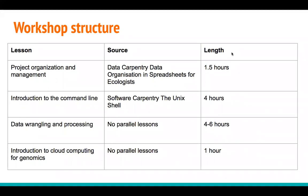The third lesson — the core part of the workshop — is the data wrangling and processing lesson, which has no parallel in any other Carpentries materials and is very specific to working with genomics data. It takes somewhere between four and six hours depending on the audience. It's better to assume it will take longer, as there are many important concepts covered. The workshop ends with a short introduction to cloud computing for genomics, which is about an hour long and quite introductory.